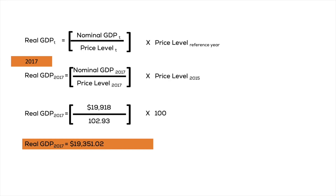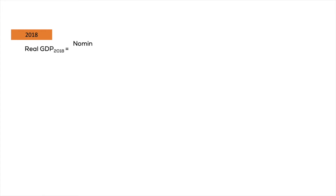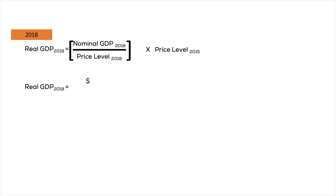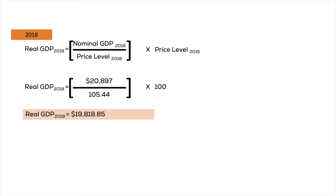We can repeat the same thing for 2018. The nominal GDP of 2018 is 20.8 trillion, divided by the price level of 2018, which is 105.4, multiplied by 100. That tells us the real GDP in 2018 is 19.8 trillion dollars in 2015 dollars. So now we're able to compare apples to apples — 2017 to 2018 real GDP — and what we know is real GDP grew by roughly 500 billion dollars.